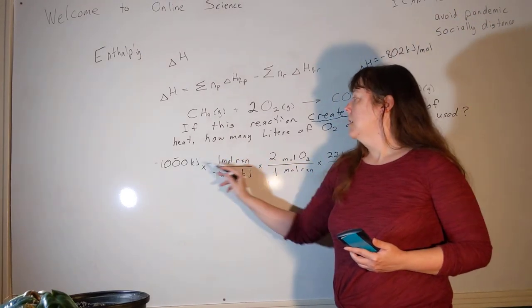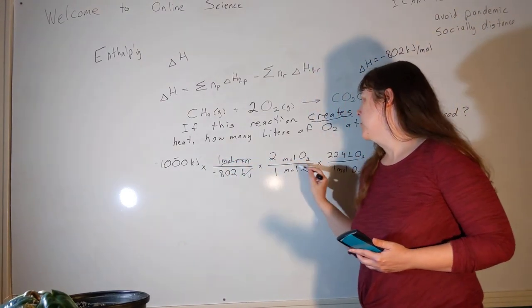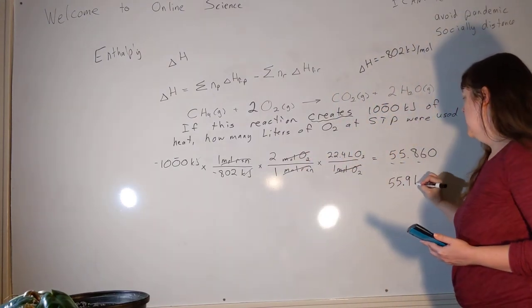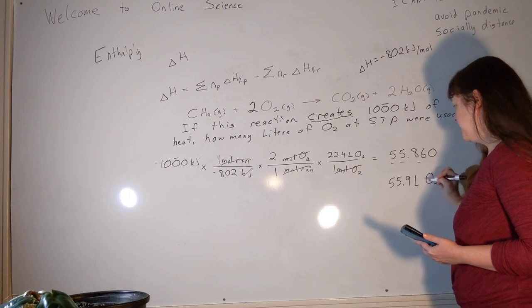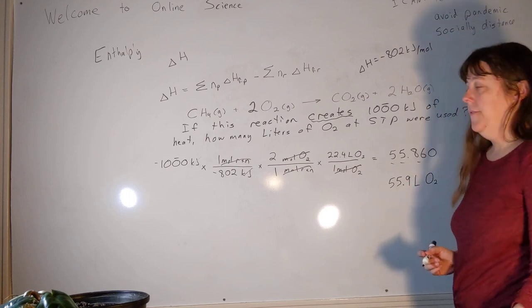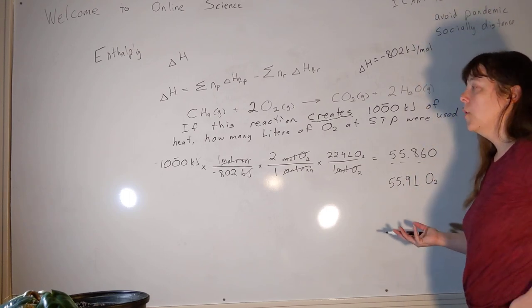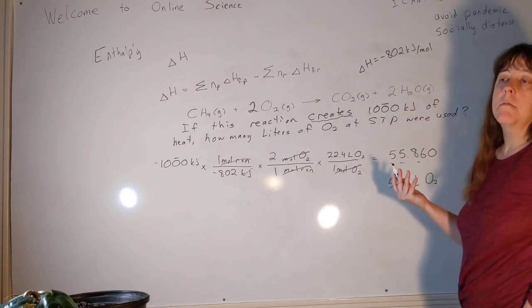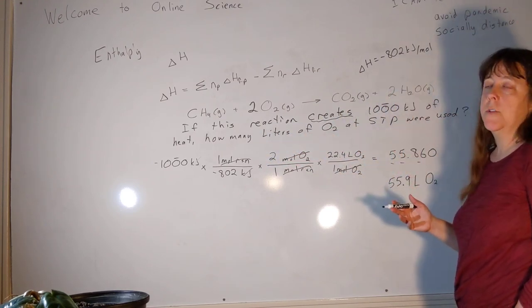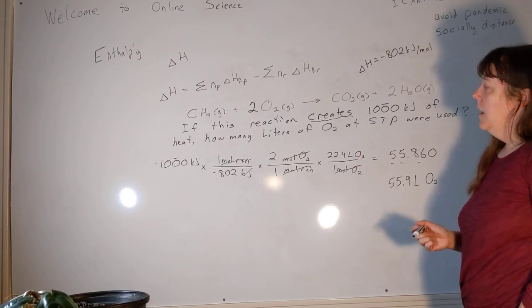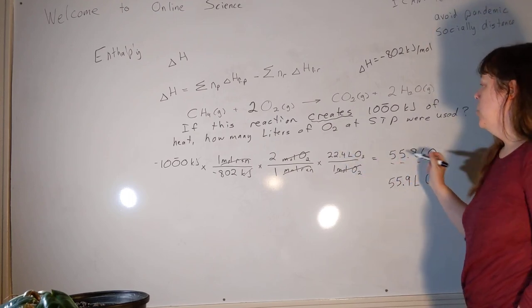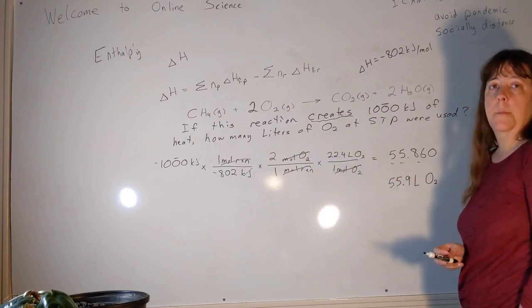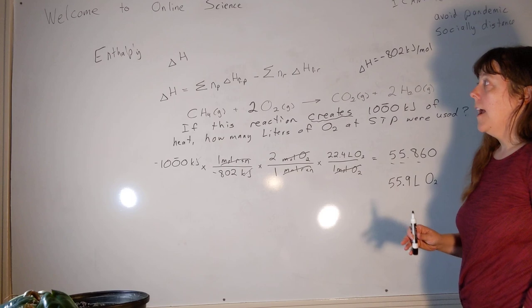What was our unit? Kilojoules cancel, moles of reaction cancel, moles of O2 cancel, and we're left with liters of O2. We don't have a really strong feel at this point about what kinds of numbers are reasonable, but that's more than a mole's worth of heat. If we do a mole of reaction, we only get 800 kilojoules and we had 1,000. And every mole of O2 would have been 22 liters, but we needed two moles of O2 for each reaction. So yes, the number seems reasonable.